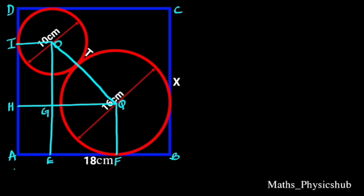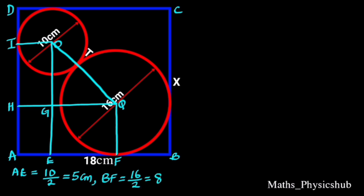From the diagram, notice that AE equals the radius of the small circle, that is 10 over 2 which is 5 cm, and BF equals the radius of the big circle, that is 16 over 2 which is 8 cm. Since AB is 18 cm, EF equals 18 minus (5 plus 8), which equals 5 cm.